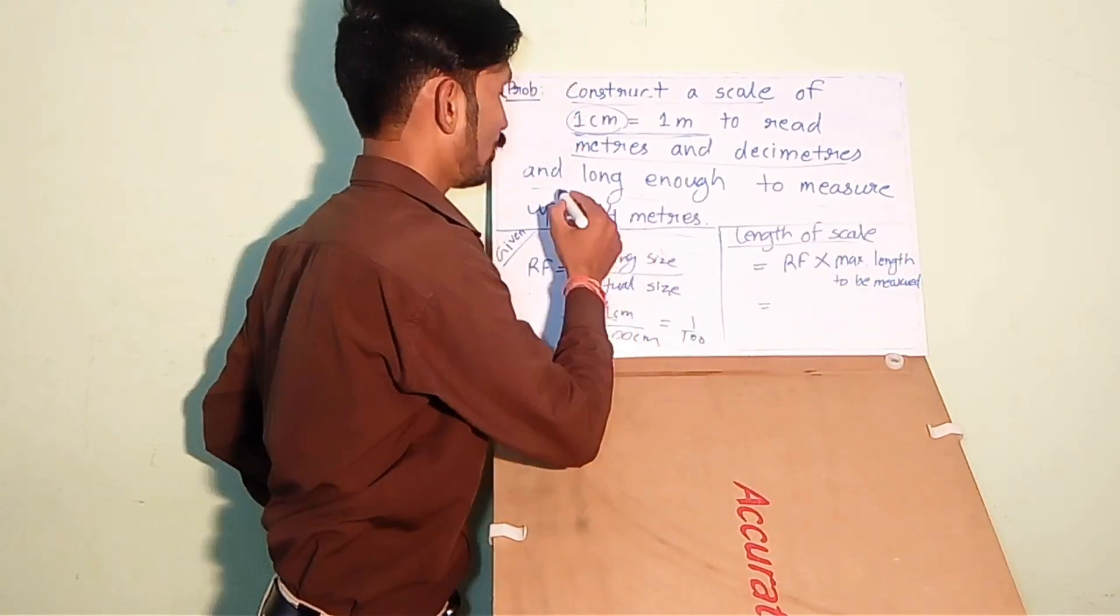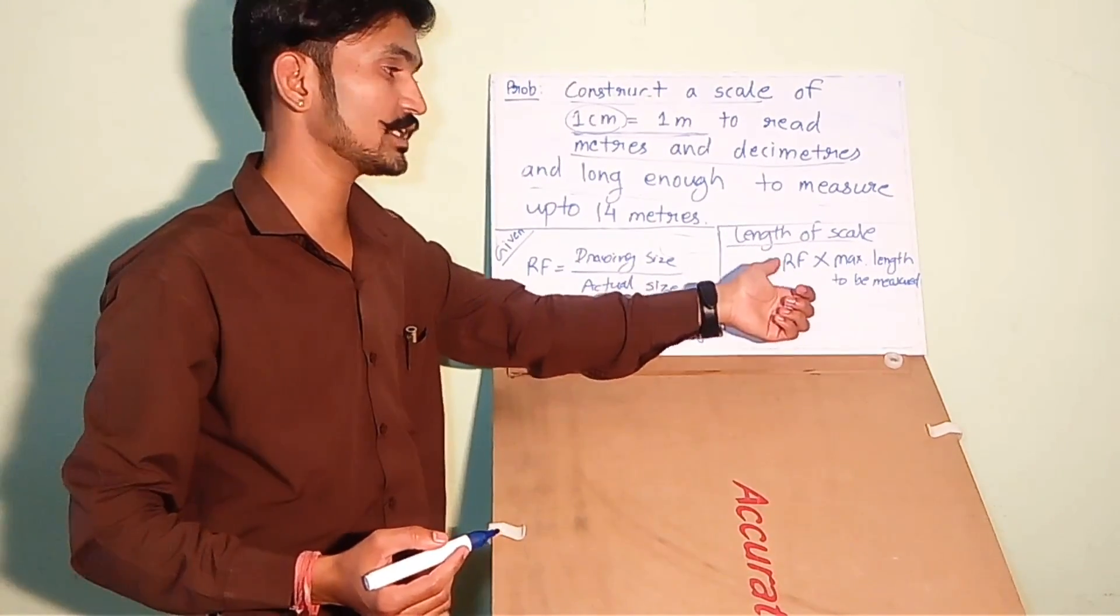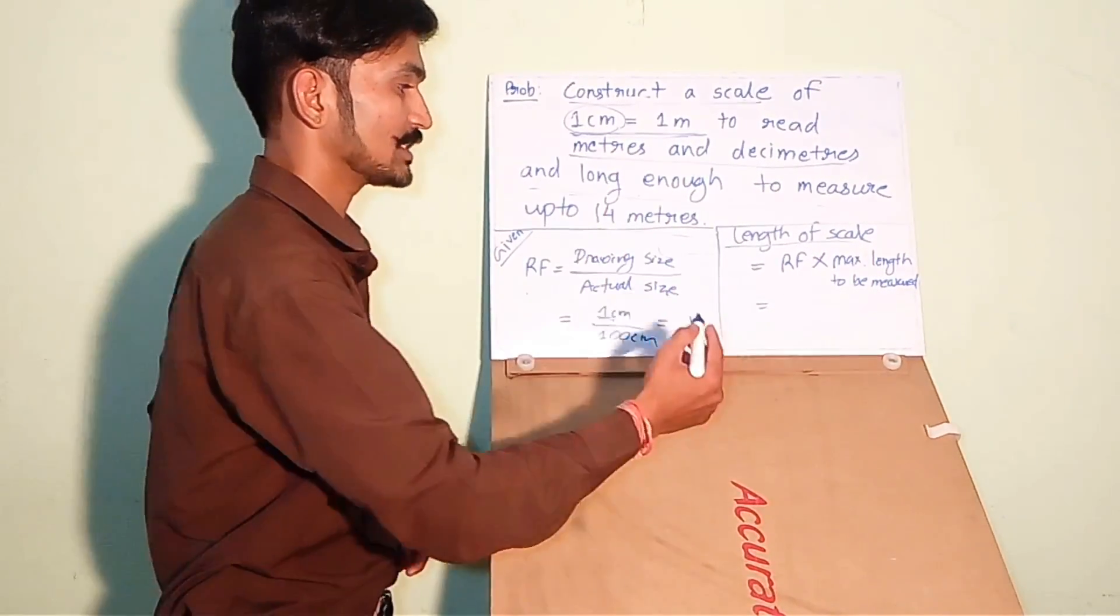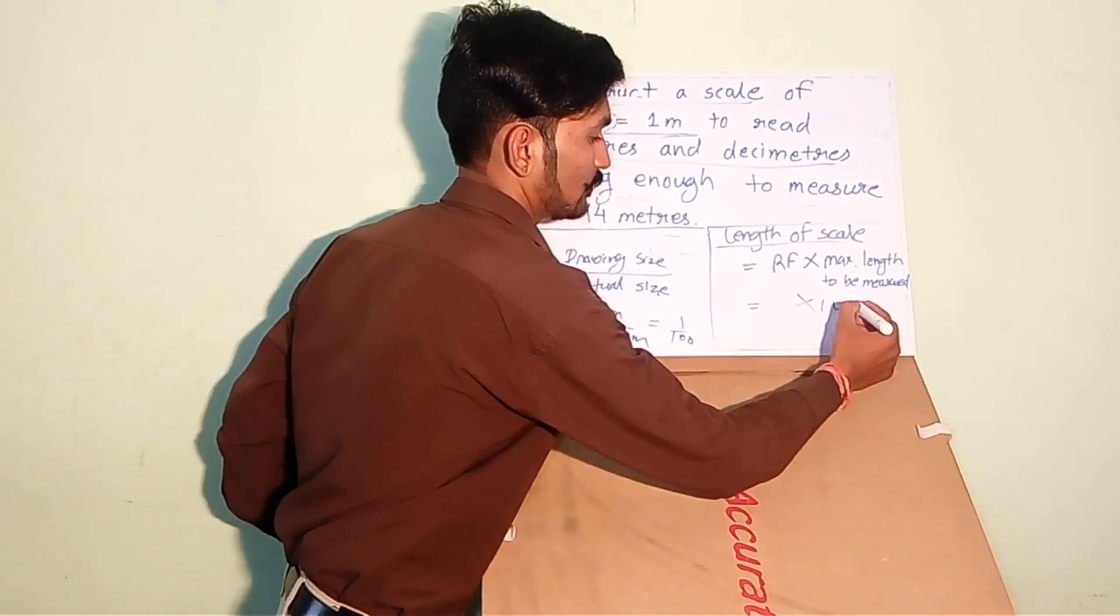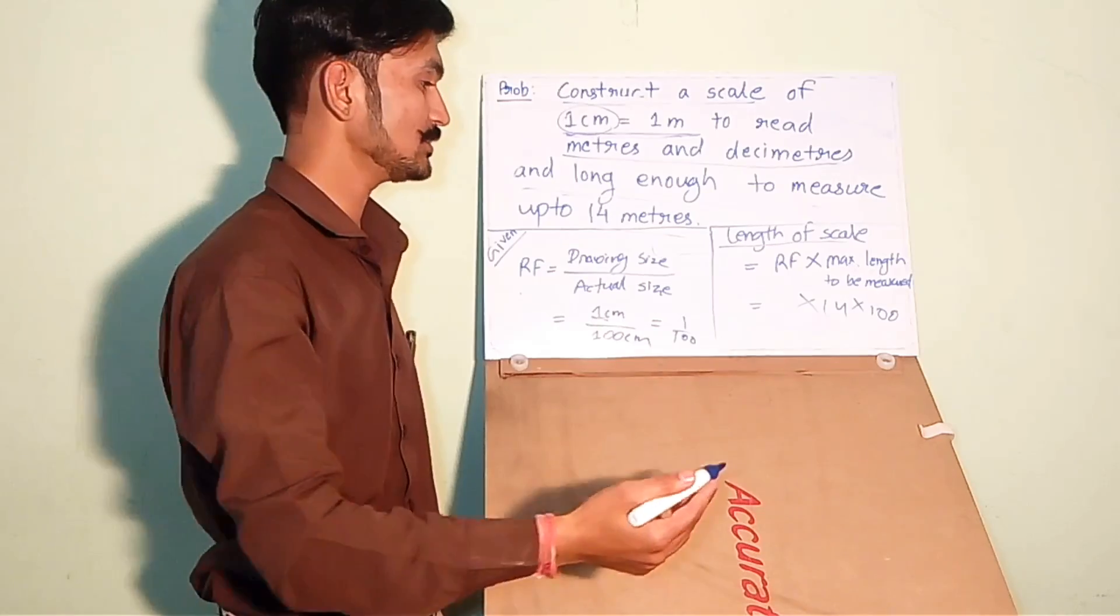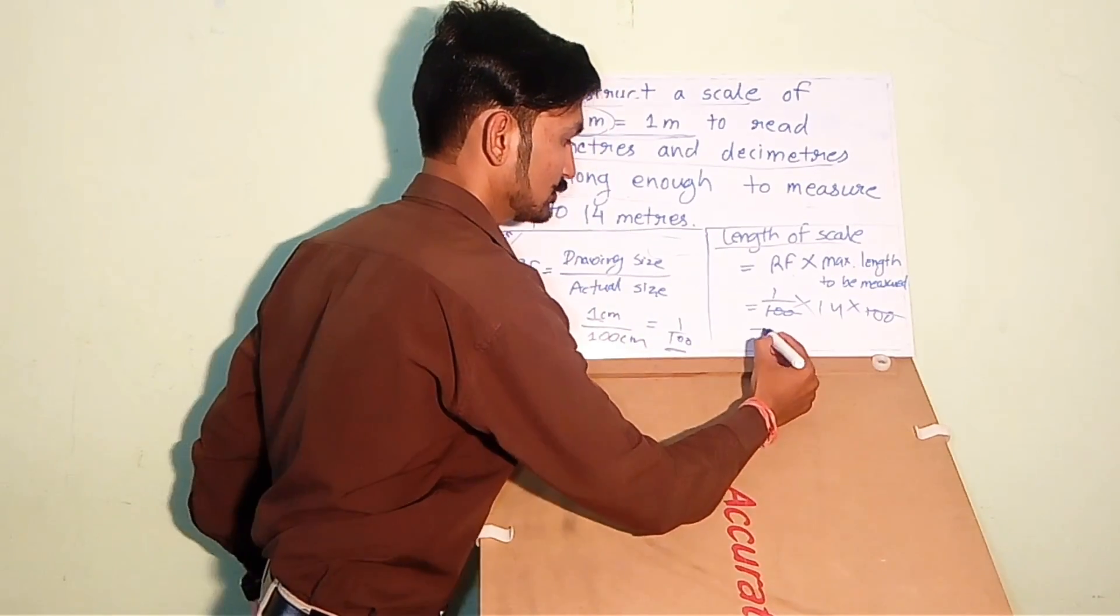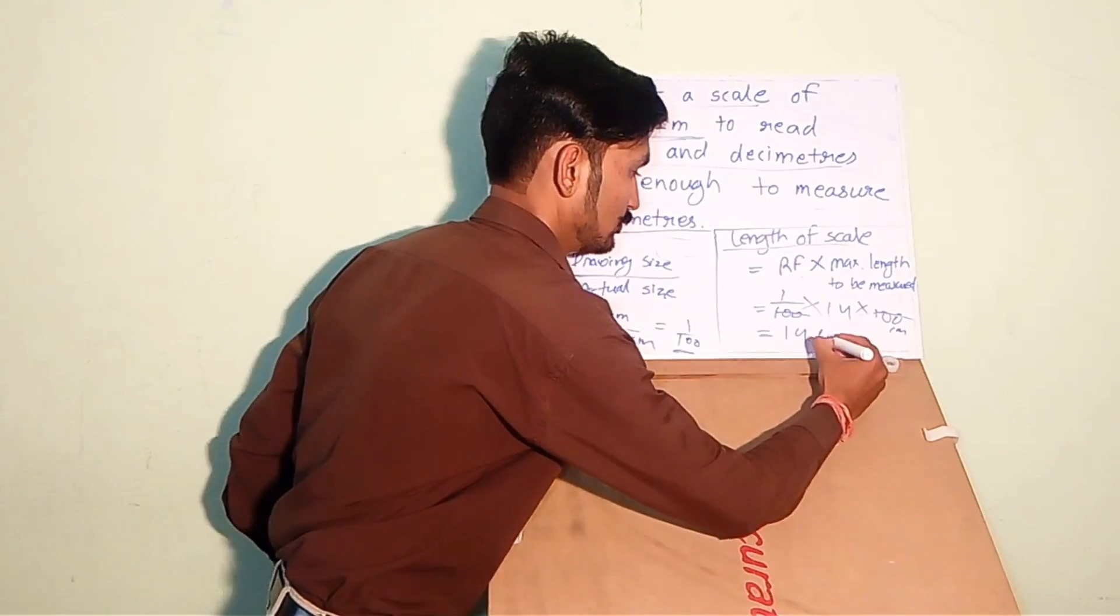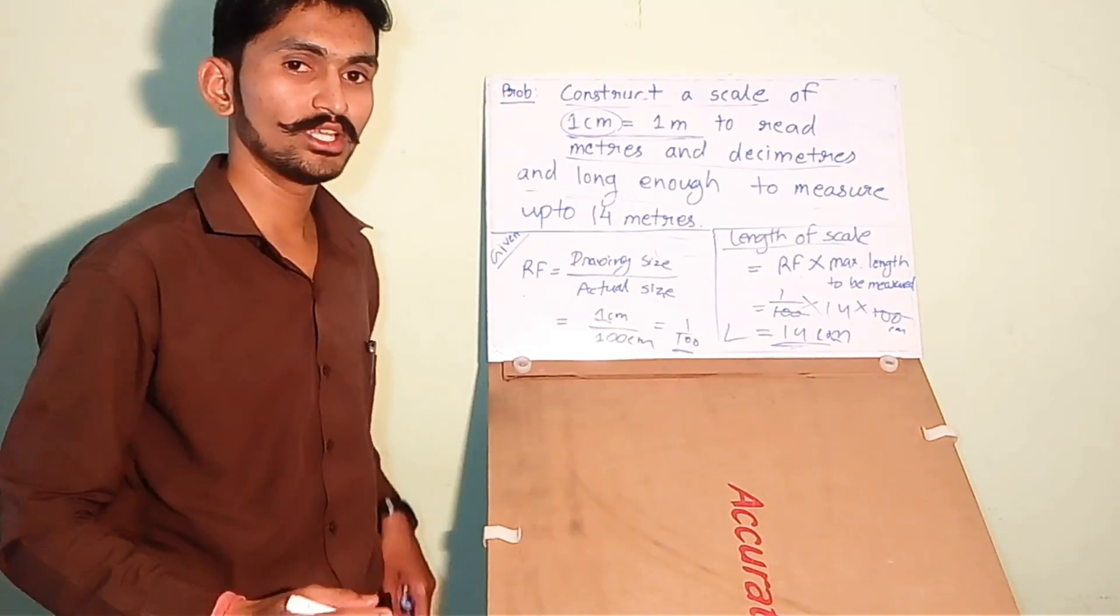From this line we can calculate the length of the scale because length of scale equals RF multiplied by the maximum length to be measured, which is 14 meters. We have to convert it into centimeters: 14 times 100, and RF is 1 by 100. 100 cancels and we get 14 centimeters. So the length of the scale will be 14 centimeters.